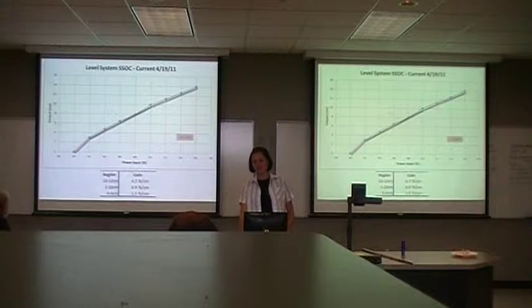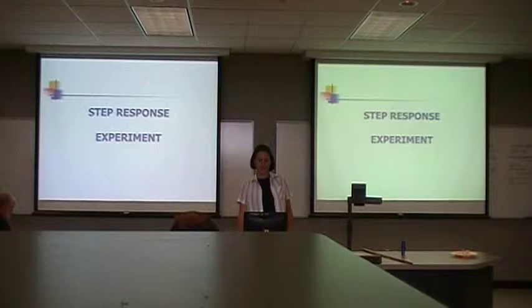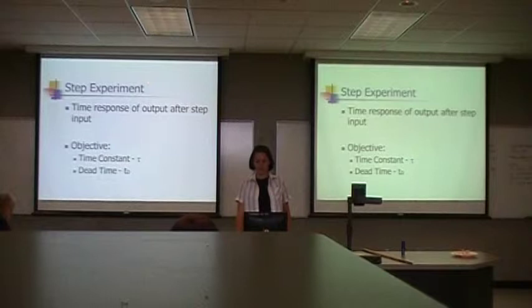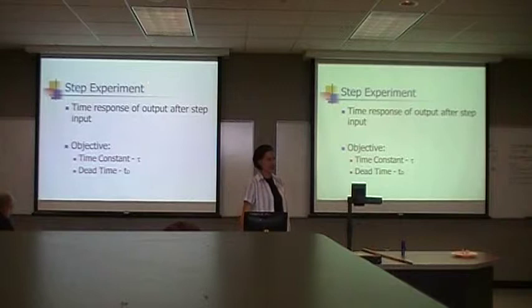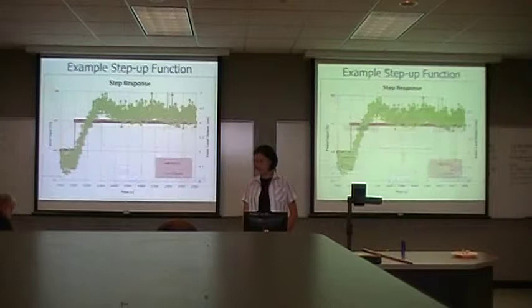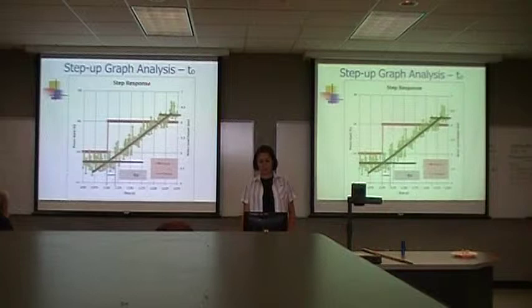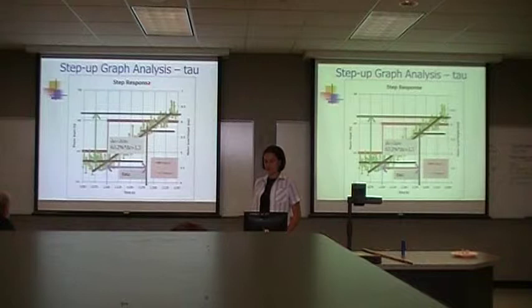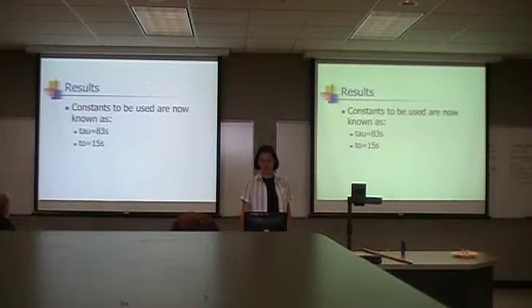This was in the middle of April, so happy day. While I was making the new SSOC, I also did a step response. Step response helps you find tau and t-naught, which you use when you're calculating the PI model. There's t-naught — the time it takes to start responding — and tau is delta C times 63.2%. We use those equations, and these are the constants for our system.